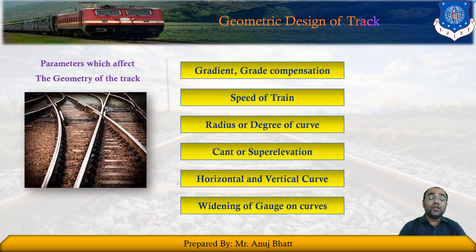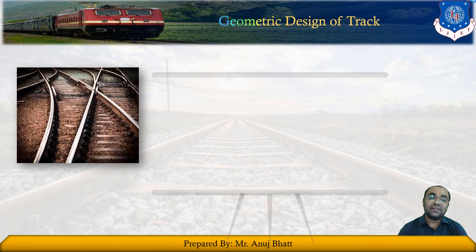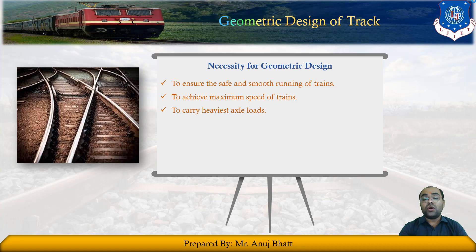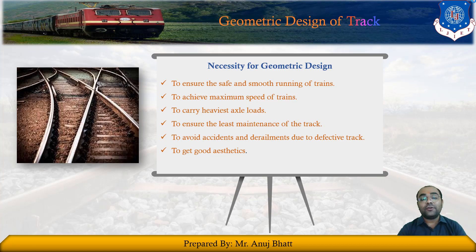It is very important for tracks to have proper geometric design in order to ensure safe and smooth running of trains at maximum possible speed, also carrying the heaviest axle load. Speed and axle load of the train are very important parameters considered while arriving at the geometric design. The necessity of geometric design is to ensure safe and smooth running, achieve maximum speed, carry the heaviest axle loads, ensure least maintenance of the track, and to avoid accidents and derailments due to track defects.